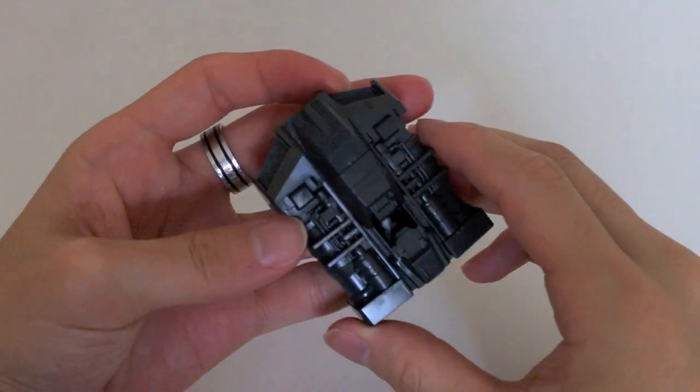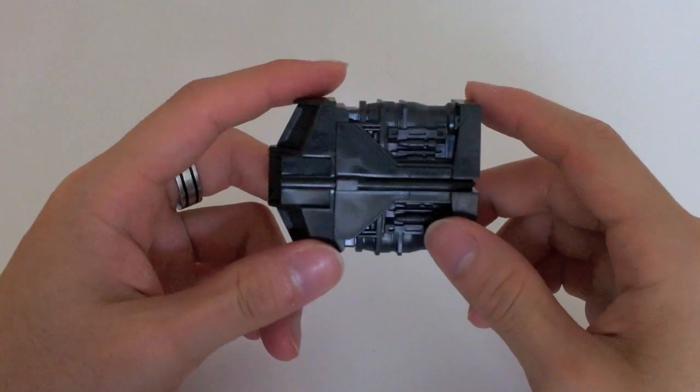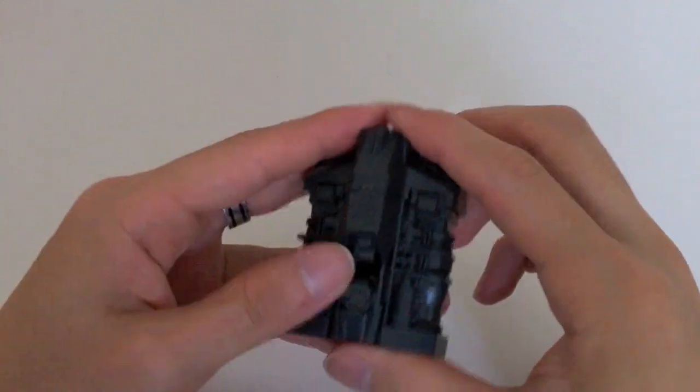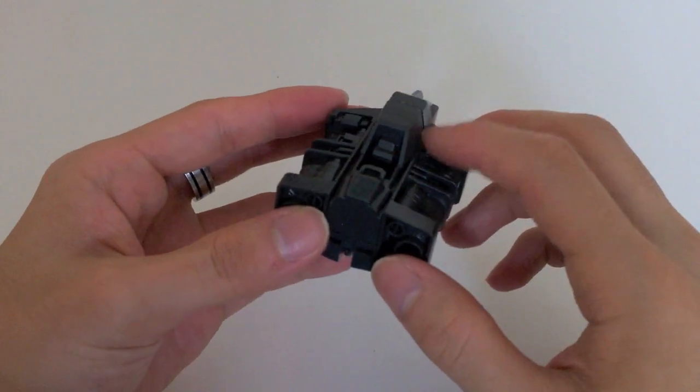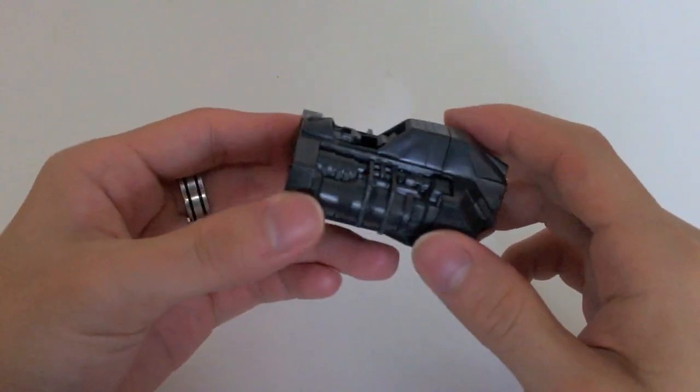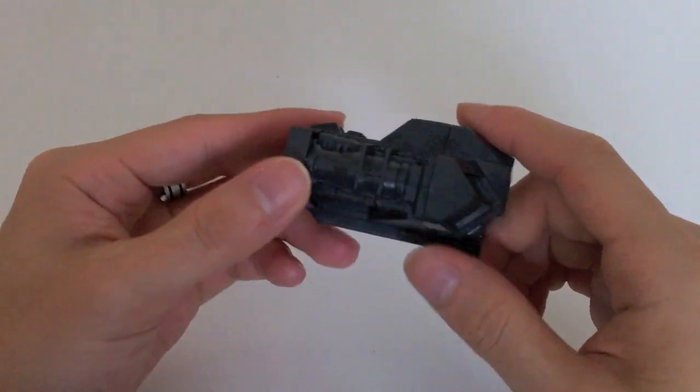Moving on to the core block. It's basically just that, a single block. Nothing on it moves. Unlike the core block that I believe came with, I forgot which one, but there was a version of the Master Grade Gundam, I think it was probably the version 1.5.